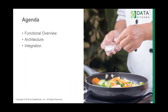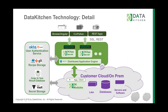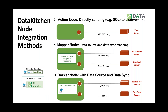A recipe is a graph of nodes. Each node executes here, but there are different types of nodes that do different things. When thinking about implementing our system, you have to think about what nodes you're going to run and what technologies you're going to use. We have a bunch of different ways that these nodes can integrate.